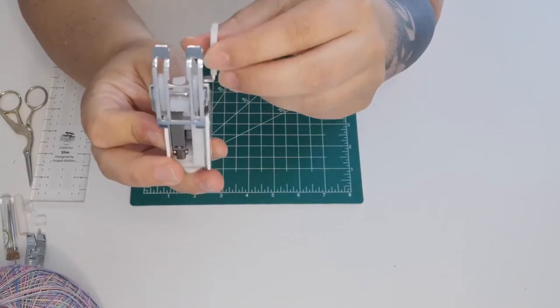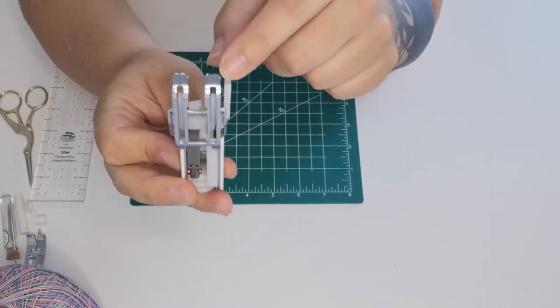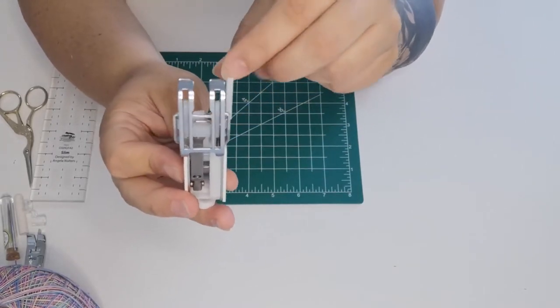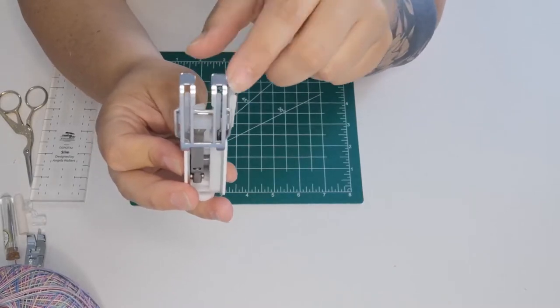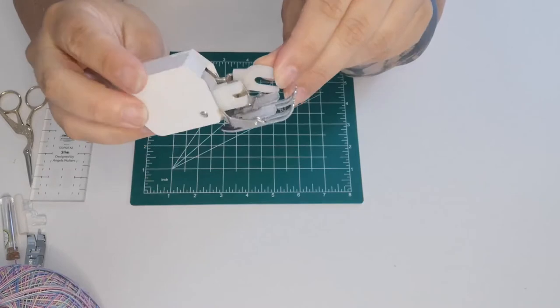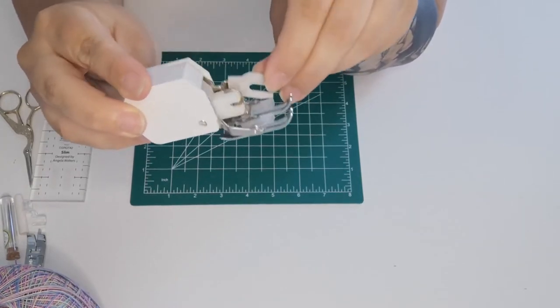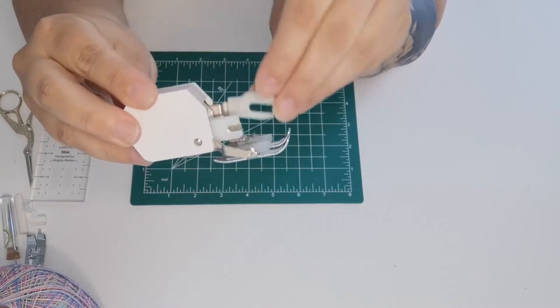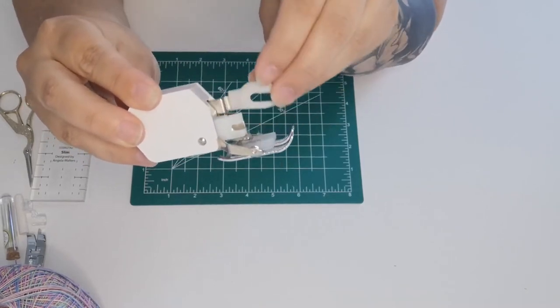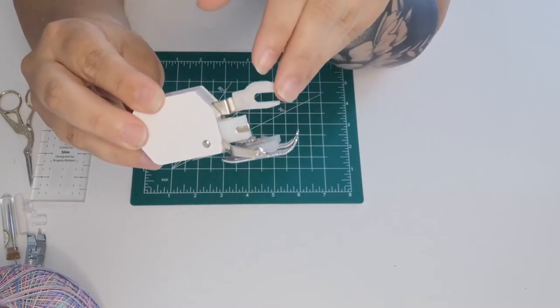This acts like a second set of feed dogs and what this does is it grabs the top of your fabric while your feed dogs are grabbing your bottom fabric and it makes sure that everything goes in nice and smoothly. It feeds in all of your fabric nice and evenly so the whole sandwich is gonna go in evenly. This is gonna cut down on puckering, shifting, you know all that good stuff.